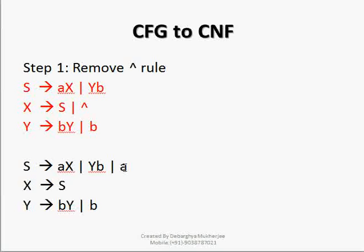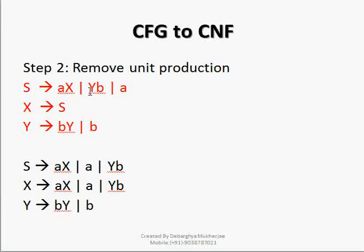From the knowledge of our last class we can easily convert aX and Yb. But to replace the unit production rule X→S, what we will do is copy the entire production rule of S. So whatever is given for S, we will just replace this S with the rules given. Our new rule will become S→aXYb, and this entire thing will come here instead of this S.